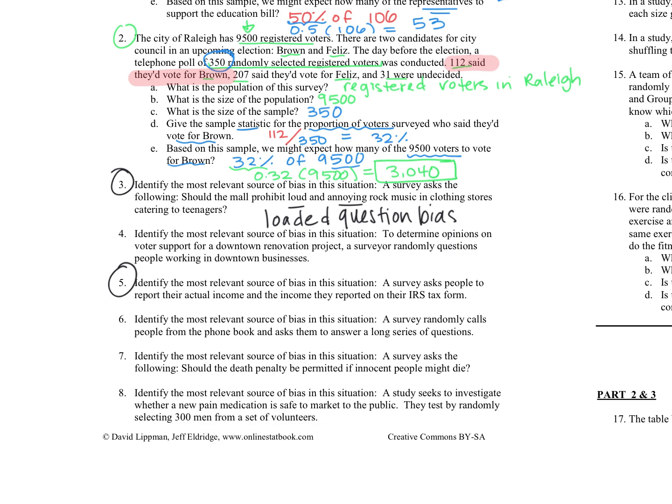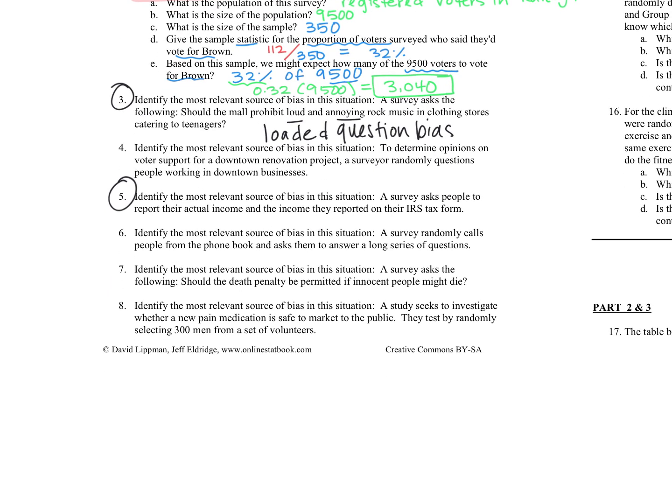For question number five, we're looking at, same thing, looking at for bias. This time we have a survey that asks people to report their actual income and the income they reported on their IRS tax form. So for that one, there might be some perceived lack of anonymity on there. They might be fearful for what their responses are because you can get in trouble if you're not paying the correct taxes, right? So it could be a perceived lack of anonymity. And for that one, again, I'm thinking more about the fear that something would happen to them if they did respond with a difference between their actual and reported incomes.